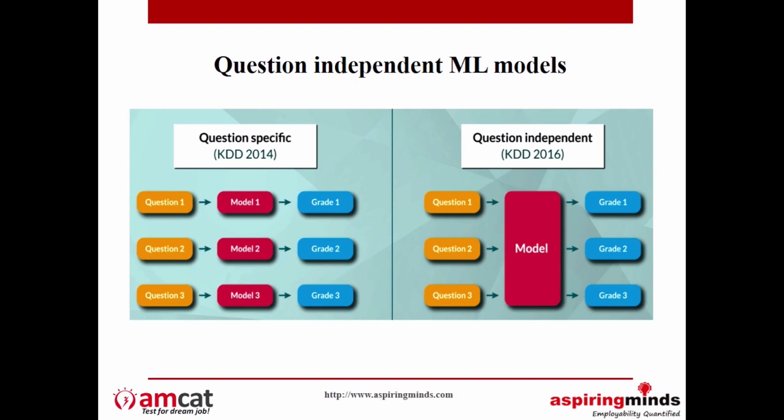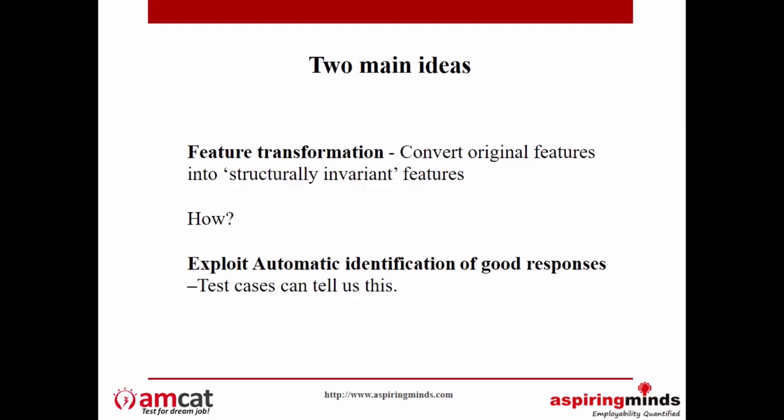This was the second set of work, published in 2016, where we asked: can we have a question-independent model? Rather than having a model for each question, can we have one model that works for all questions and is able to generate a grade? The main idea was: can you convert the original features into what we call structurally invariant features — features that would retain their meaning across problems? If a feature value being high means it's a good solution and low means a bad solution, and the same feature works across different problems.